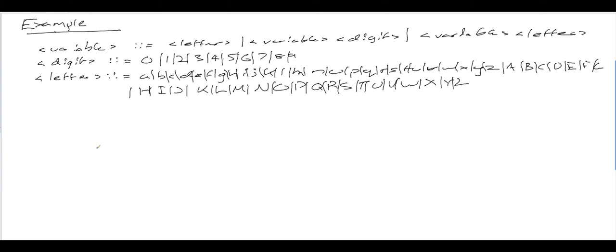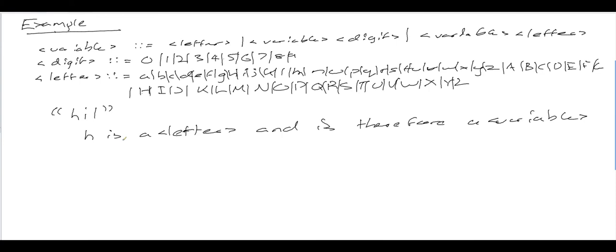Let's work through an example of how we use this to check if a particular variable is valid — we're going to see whether HI1 is a valid variable. H is a letter because H appears in the definition of the letter production rule, and therefore H is a variable. HI is a variable and a letter: H is a variable, and I is a letter, and because a variable can be a variable and a letter, HI is therefore a variable.